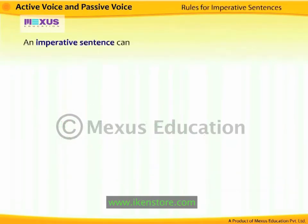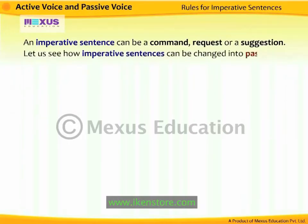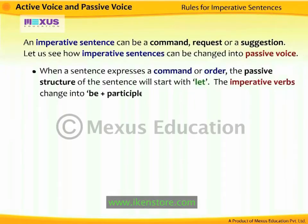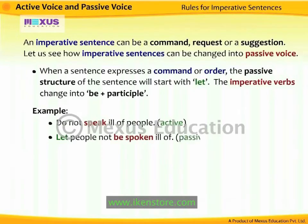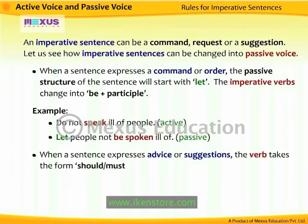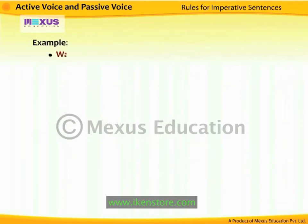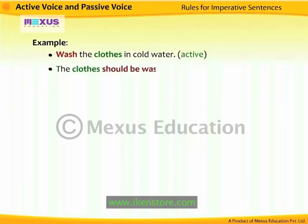An imperative sentence can be a command, request, or a suggestion. When a sentence expresses a command or order, the passive structure of the sentence starts with 'Let,' and the imperative verbs change into 'be + participle.' For example, 'Do not speak ill of people' becomes 'Let people not be spoken ill of.' When a sentence expresses advice or suggestions, the verb takes the form 'should or must + be + past participle,' and the object of the imperative sentence becomes the subject. For example, 'Wash the clothes in cold water' becomes 'The clothes should be washed in cold water.'